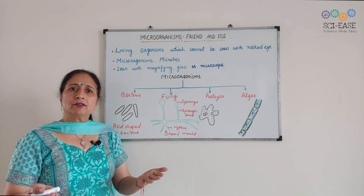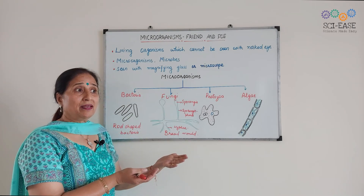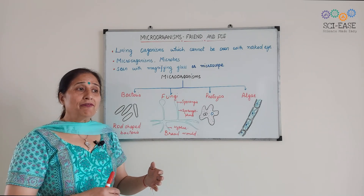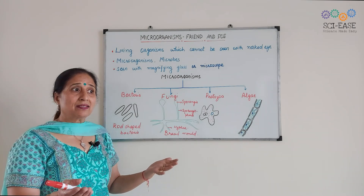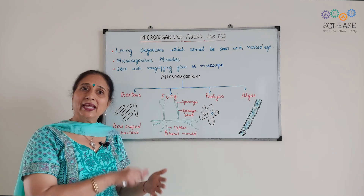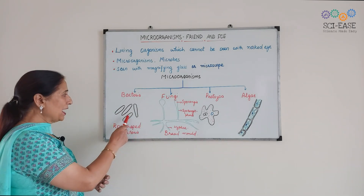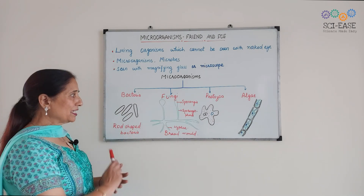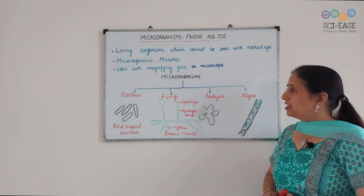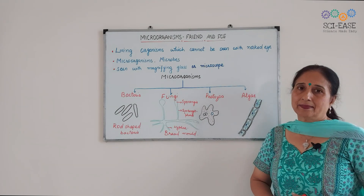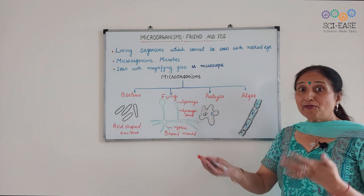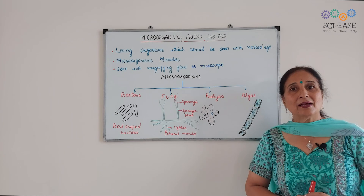Fungi also appear as white-coloured patches on leather clothes or coats that are stored for a year and taken out during rainy days. There are many examples of fungi. Another very important example of fungi is Penicillium notatum. Alexander Fleming observed this fungus and from it extracted the antibiotic known as penicillin.